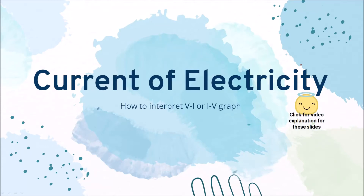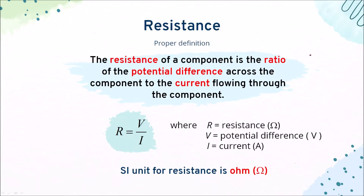Hi everyone. Let me go through how to interpret the VI graph and IV graph for current of electricity. I will talk about how to interpret the resistance if you are given the respective type of graph. We must remember that resistance is defined as the ratio of the potential difference across a component to the current — it's a ratio of PD to I, and the formula is given as such.